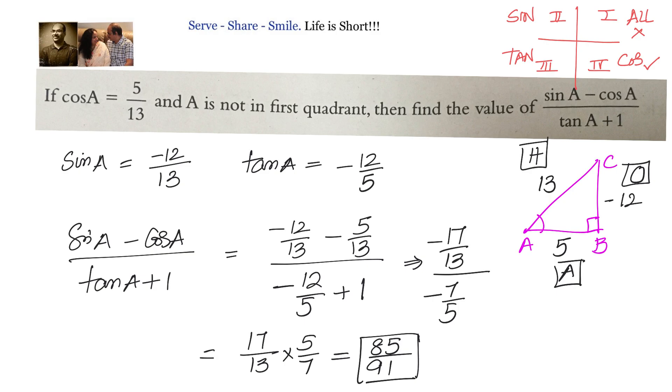We take the values appropriately then substitute for sin A minus cos A by tan A plus 1. We got sin A minus cos A by tan A plus 1 equals to 85 divided by 91.